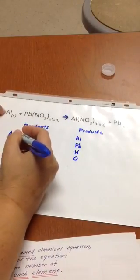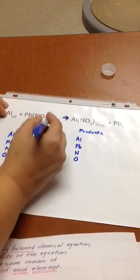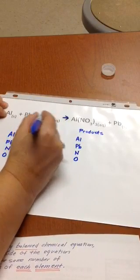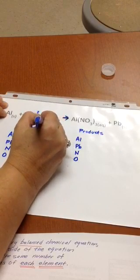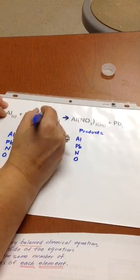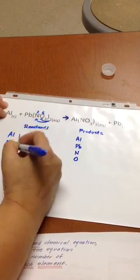So I count up what I have. I have one Al, I have one Pb. This little number here is distributing, so that means I have two Ns and six Os.